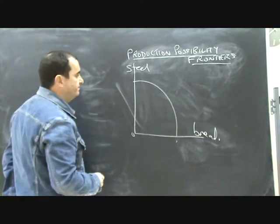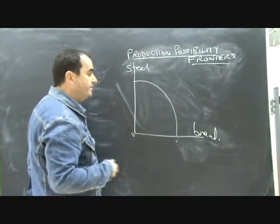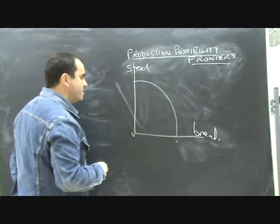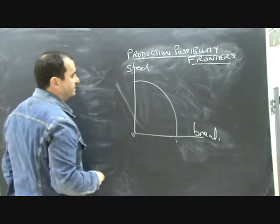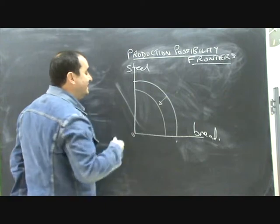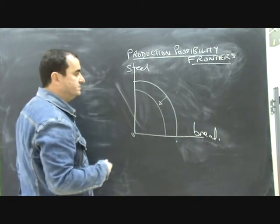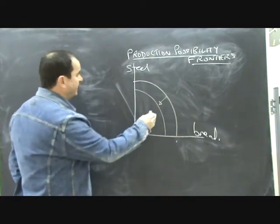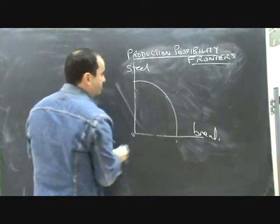A PPF can shift. Were this country to suffer some terrible natural disaster, an earthquake that ruined steel mills and bread factories, a war which destroyed, again, capital making these two products, we might expect the PPF to shift inwards, because less is capable. Likewise, had a war destroyed, or a disease that destroyed many of the labour units, the people of the economy, again, PPFs would shift inwards. And this is obviously undesirable.